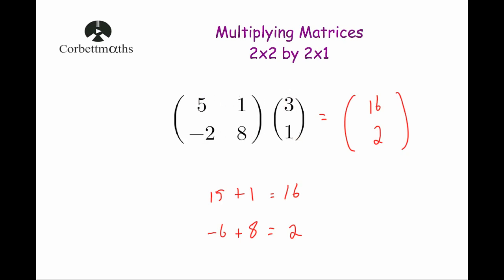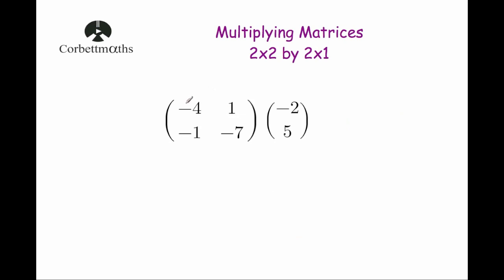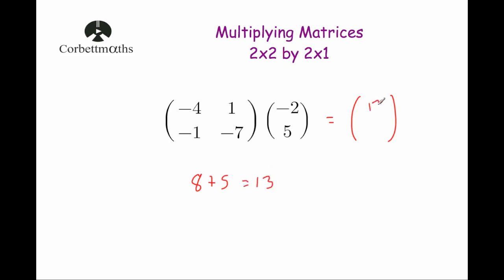Let's have a look at our last example. We're going to multiply the matrix negative 4, 1, negative 1, negative 7 by the matrix negative 2, 5. Remember, we're going to multiply the first row by the column, and then the second row by the column. So we're going to do minus 4 times minus 2, and minus 4 times minus 2 is 8, because negative times negative is a positive. Then we add 1 times 5, which is 5. So 8 plus 5 is equal to 13, and the number at the top of the matrix will be 13.